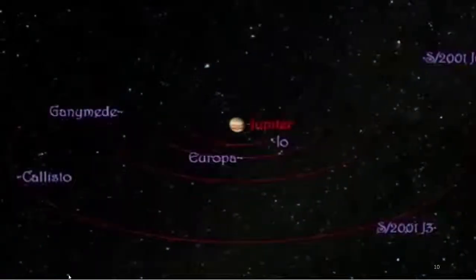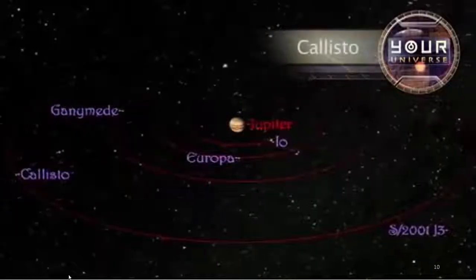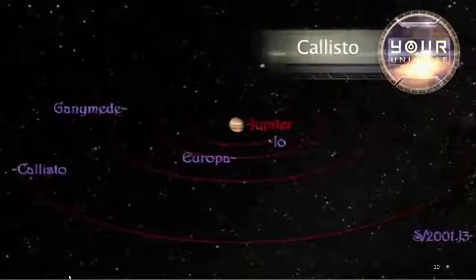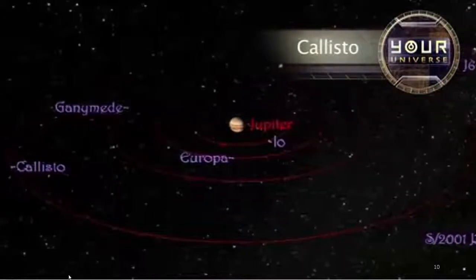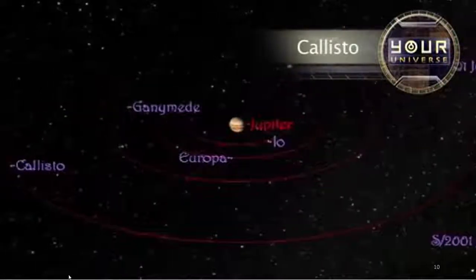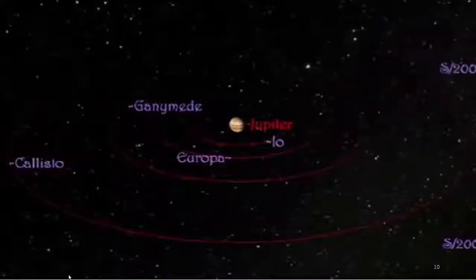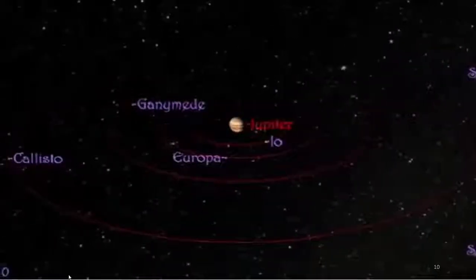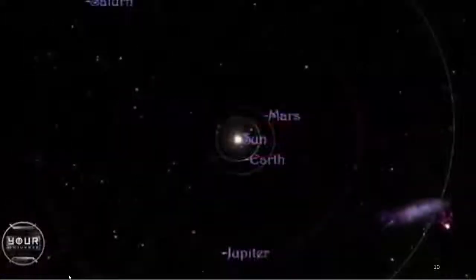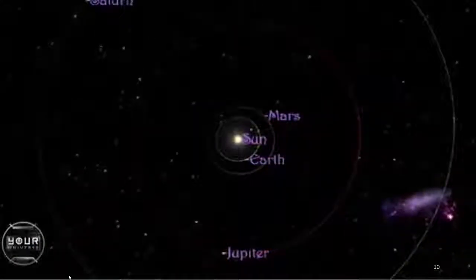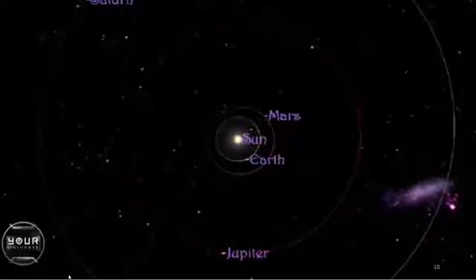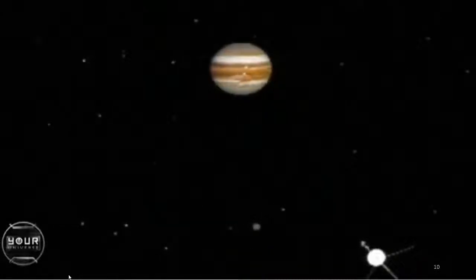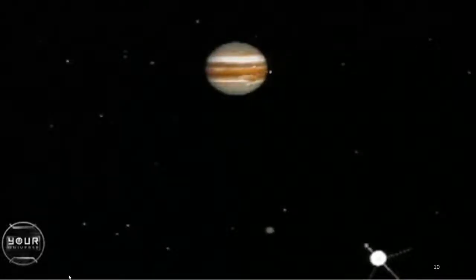Jupiter's four largest moons — known since 1847 as Callisto, Ganymede, Europa, and Io — are each about the size of Earth's moon, and they're easy targets for amateur astronomers. In fact, when Jupiter and Earth are close together, as they were for Galileo in 1610, you could actually see them with just your naked eye, if not for Jupiter's dazzling glare.